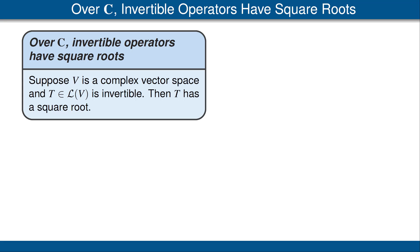Second, we cannot delete the hypothesis that the scalar field is the complex numbers, because this is simply false if we work over the real numbers. In other words, there are invertible operators on a finite dimensional real vector space that have no square root. Let's look at the proof of this result.